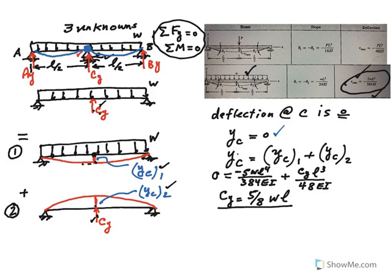What is YC? YC is the combination of these two. Basically, these two must be equal to one another because the sum has to be zero. YC1 comes from 5WL to the power 4 over 384EI, and YC2 is CY L cubed over 48EI positive. Solve for C sub Y. 48 goes into 384 eight times, so it becomes 5/8 WL. Simple.